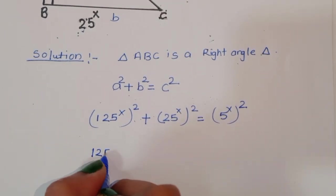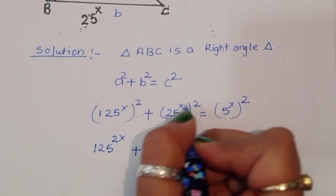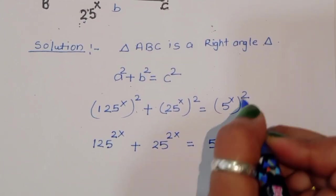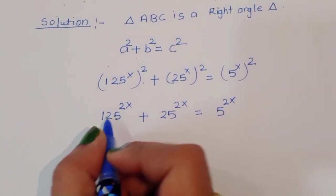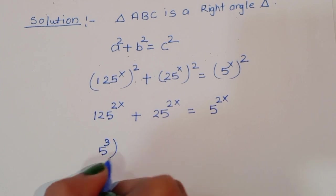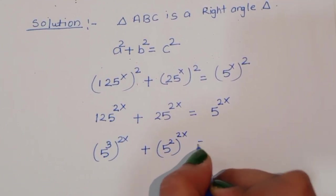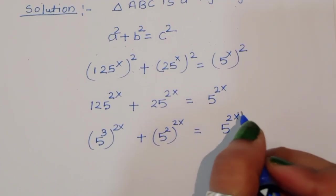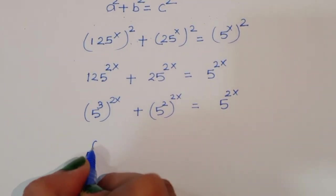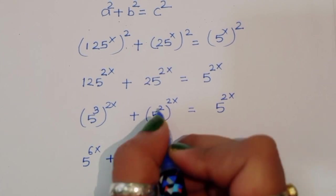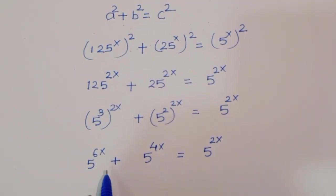We can write 125^(2x) + 25^(2x) = 5^(2x). Converting to base 5: 125 = 5³ and 25 = 5², so this becomes 5^(3·2x) + 5^(2·2x) = 5^(2x), which is 5^(6x) + 5^(4x) = 5^(2x).